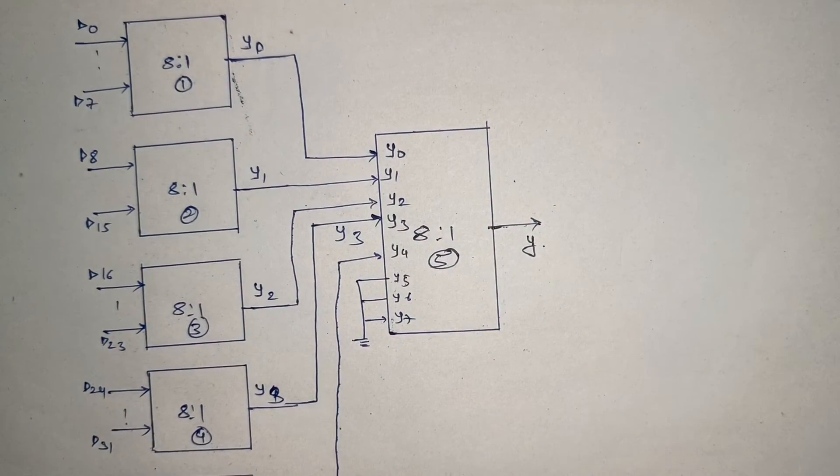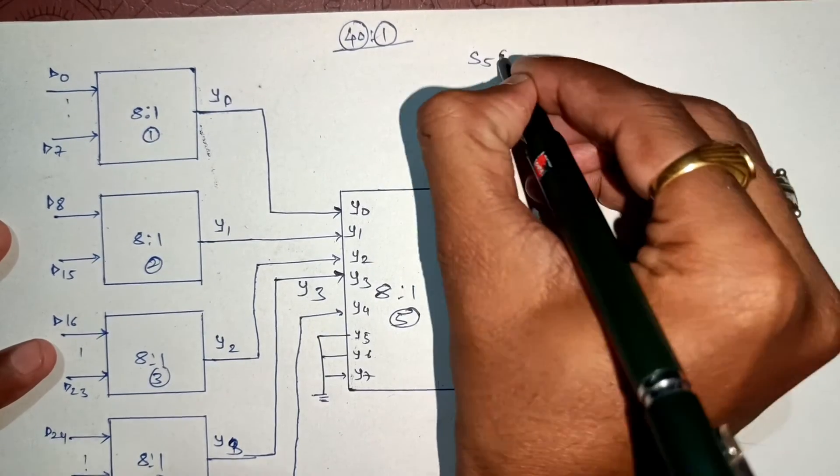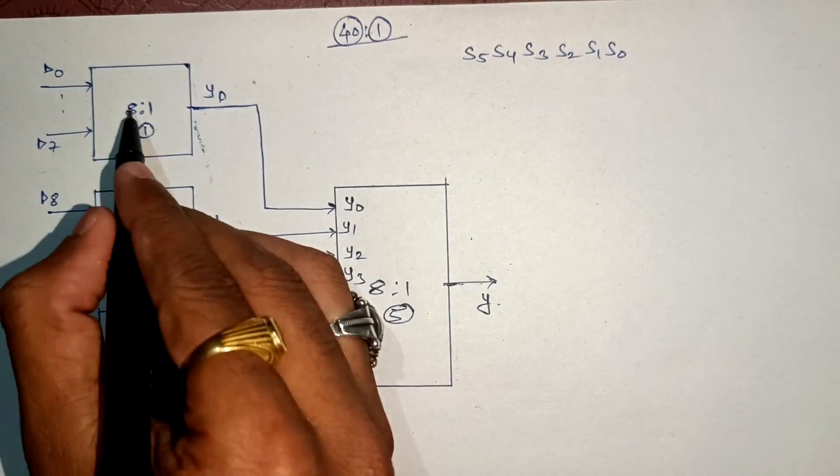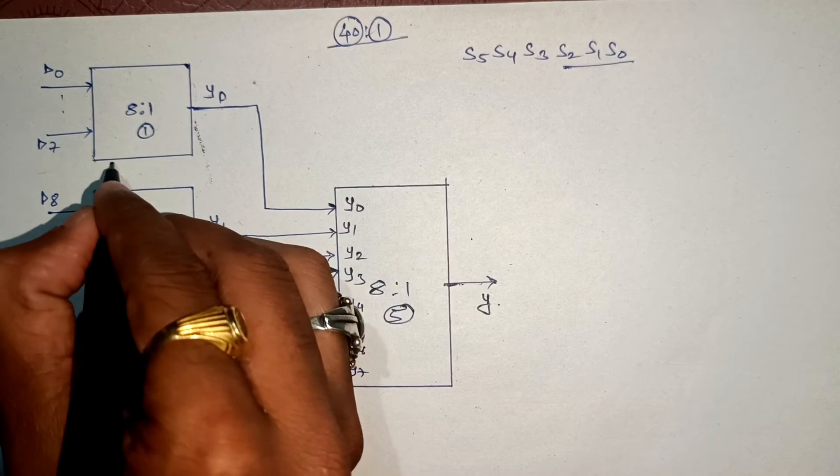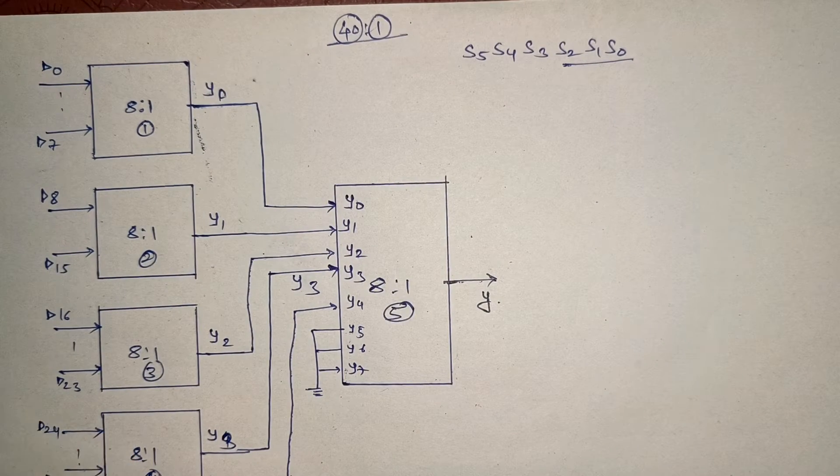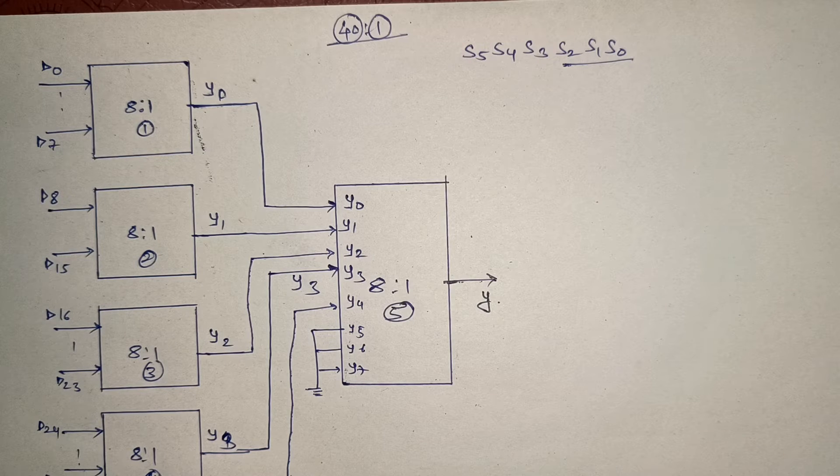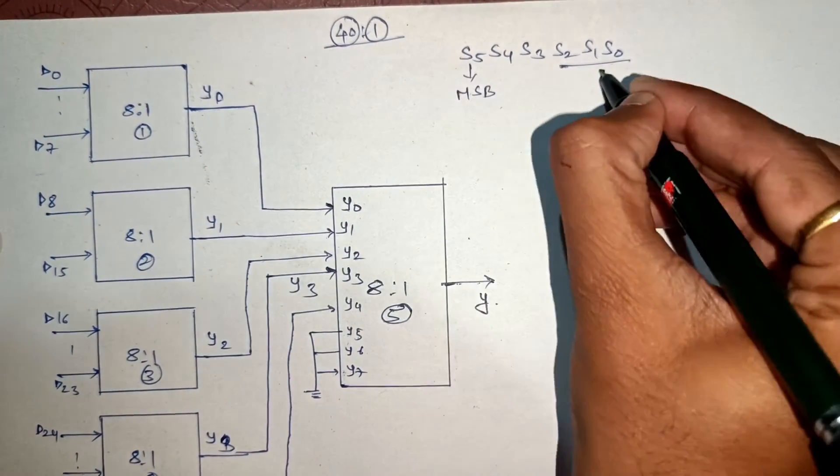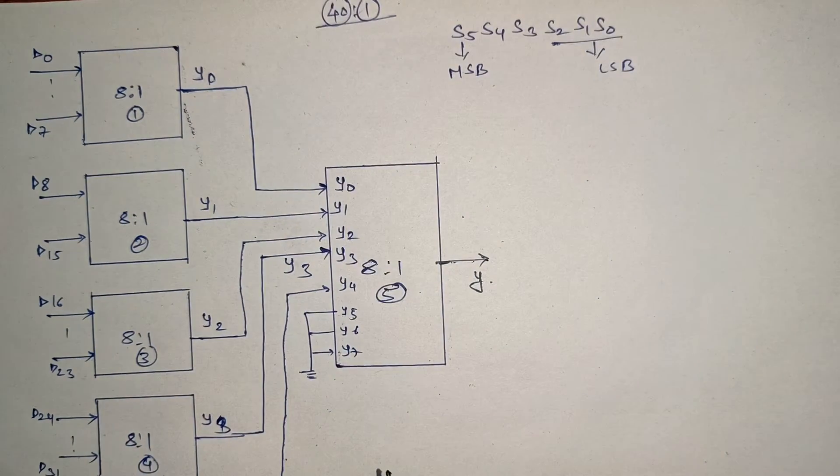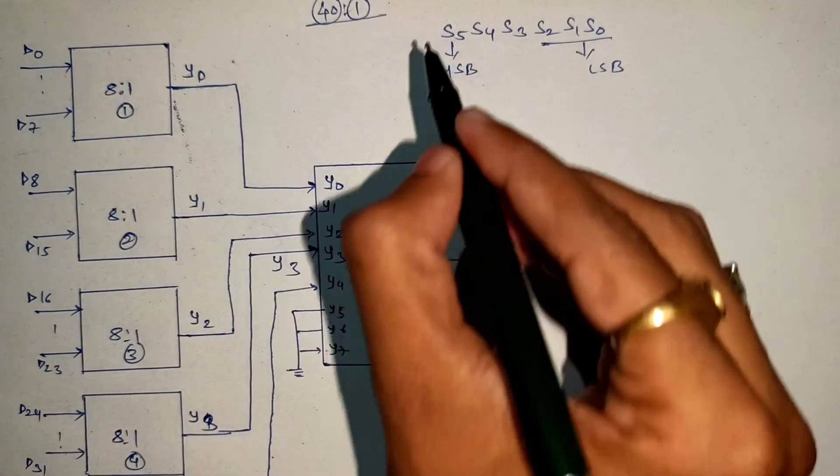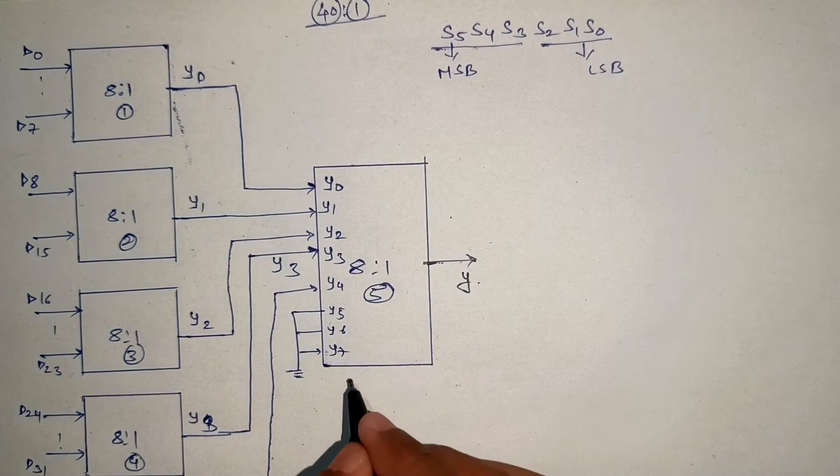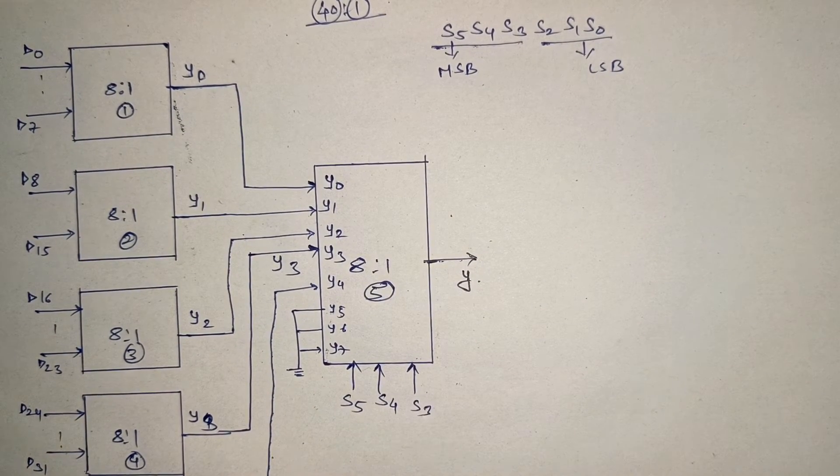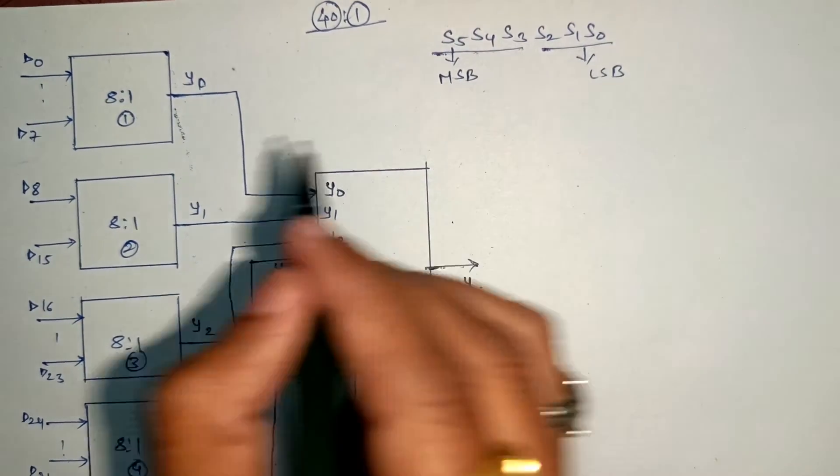Now the entire dependency comes on the select lines. We have total 6 select lines: S5, S4, S3, S2, S1, and S0. How to assign them? The 8 to 1 mux here has 3 select lines. We connect S2, S1, S0. Then S5, S4, S3 - how to assign these? This is our MSB and this is our LSB. The select lines for the final 8 to 1 mux will be S5, S4, and S3.